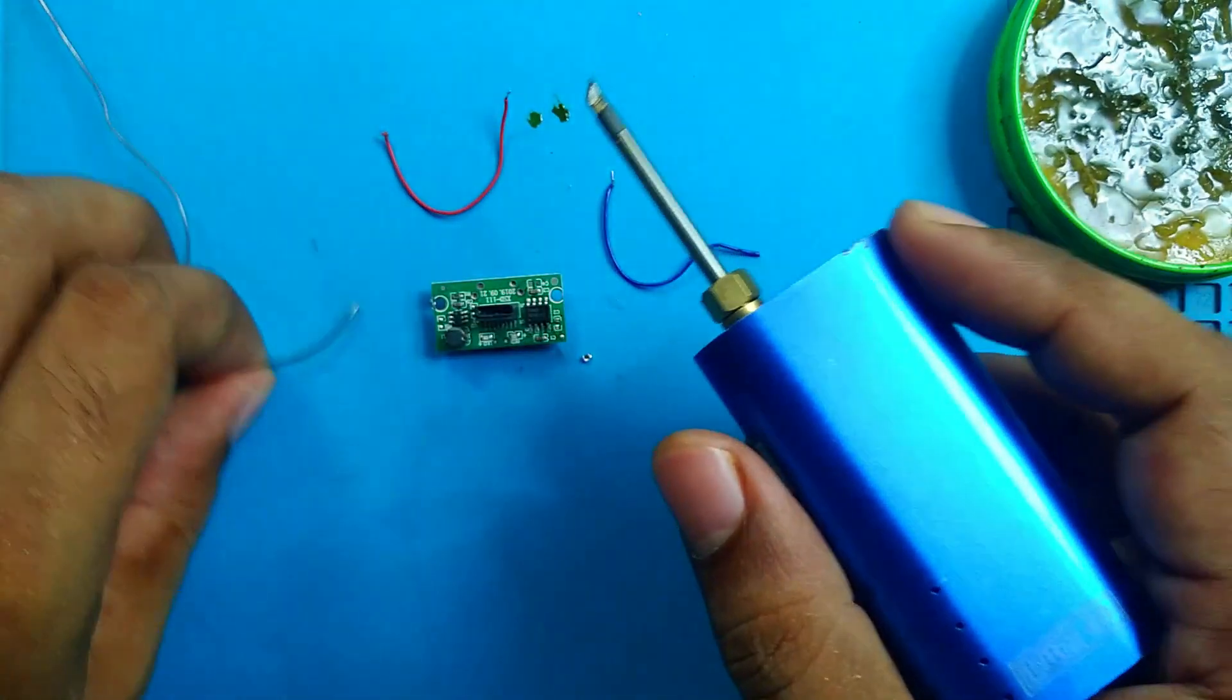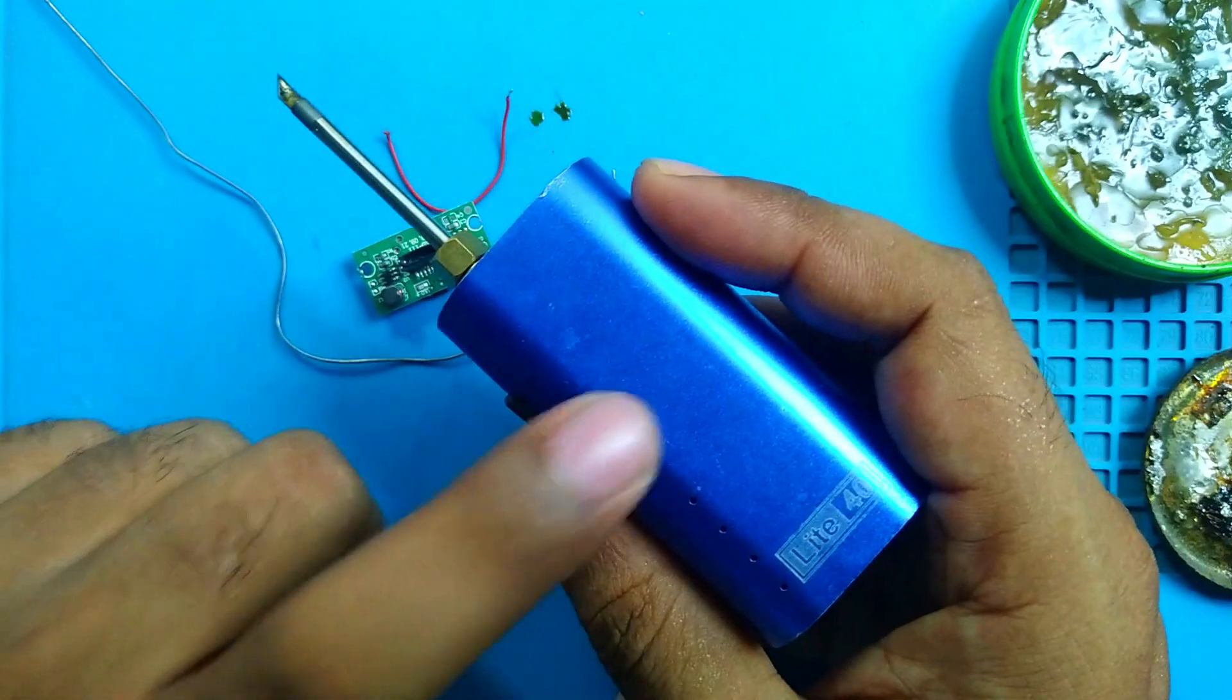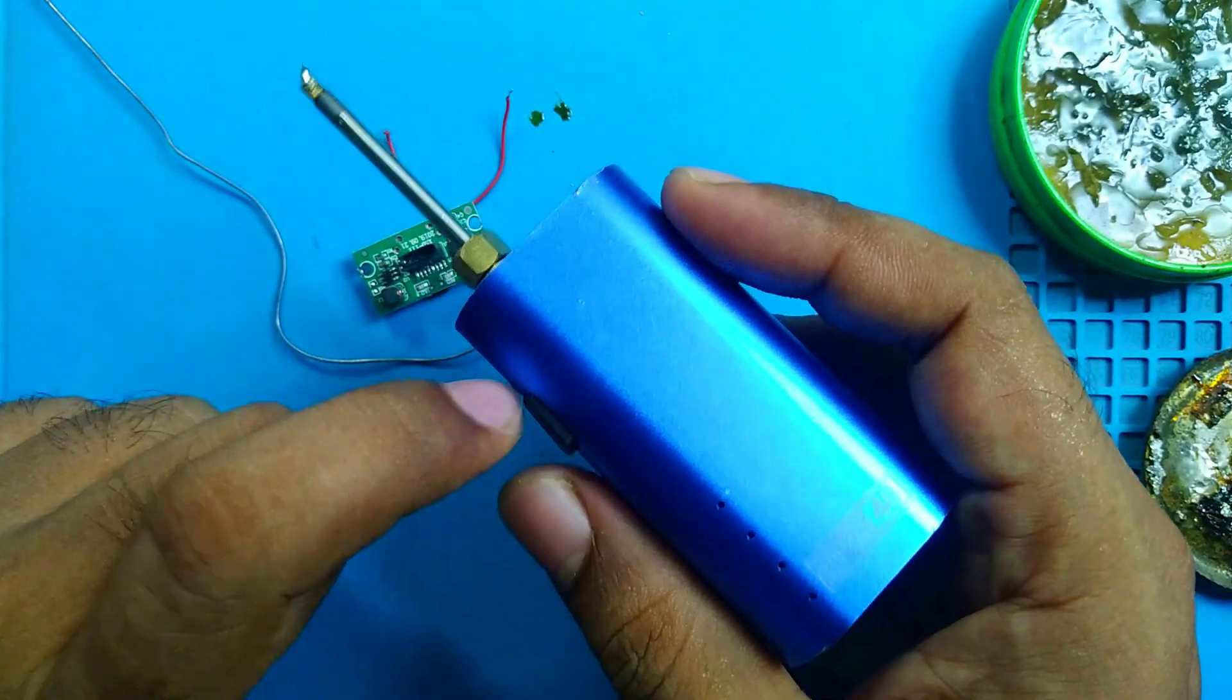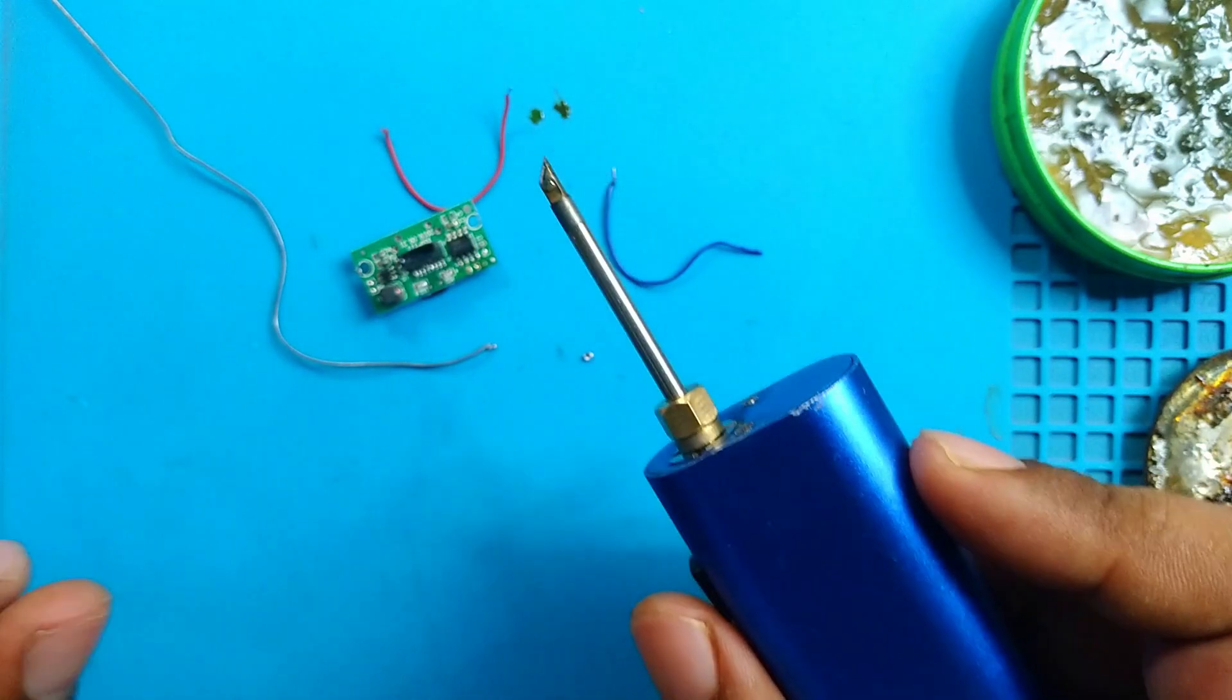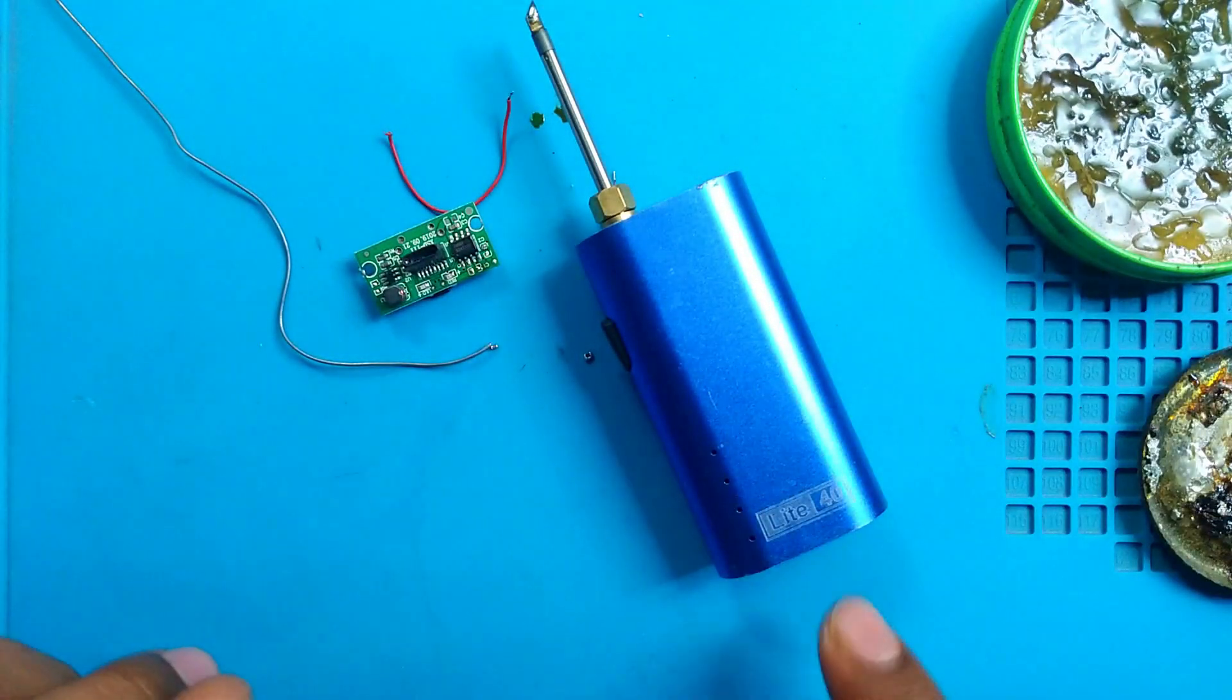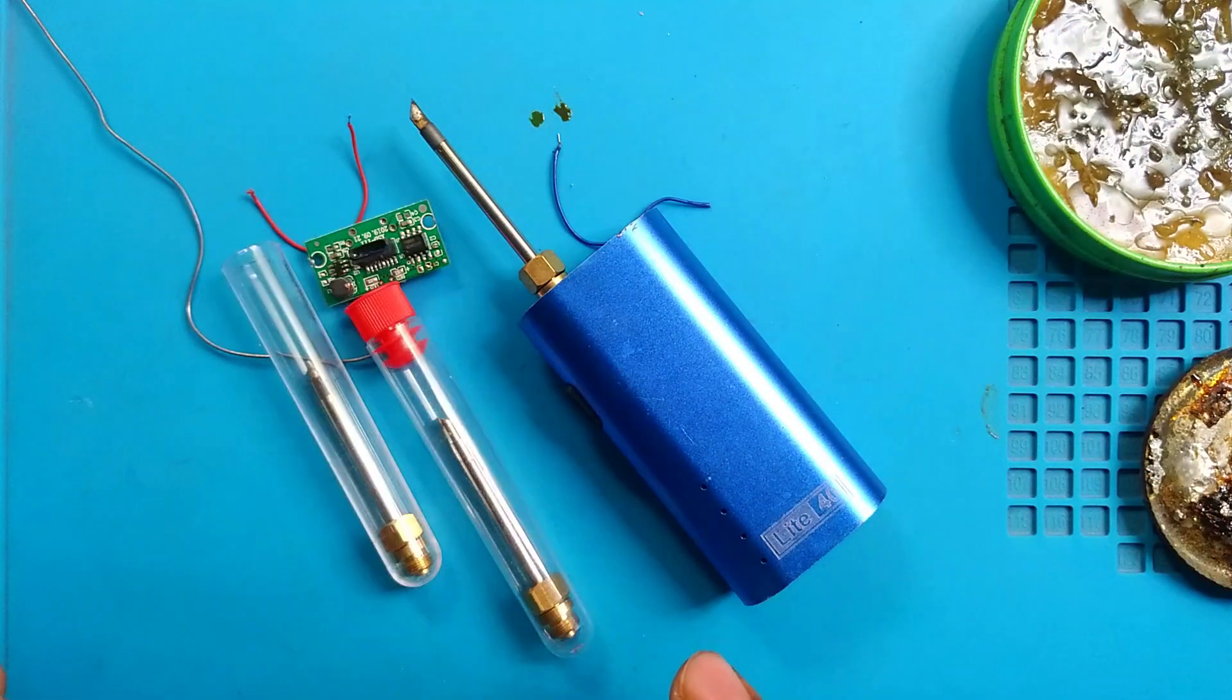And now I'm happy because now I have a micro soldering pen for very low cost. I bought this vape body only for one dollar and these three tips for seven dollars. So total eight dollars, and I have a fully rechargeable micro soldering pen with three different types of tips.